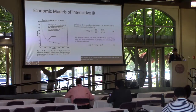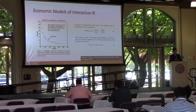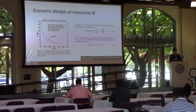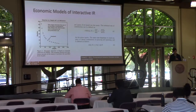Then we have work that borrows from other fields. The example I'm choosing is Leif Azzopardi's work that tries to incorporate and use economic models to explain interactive IR. This is another place where theoretical tools and ideas from other fields are imported in to try to explain what's going on when a user is searching — why they go so far in a search results list and then stop, and decide to query again or end their search task. These models are really trying to focus on explaining what's going on, not just describing it.